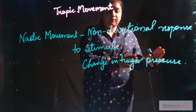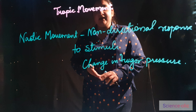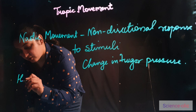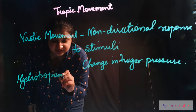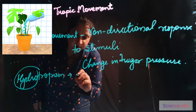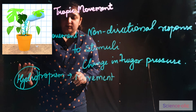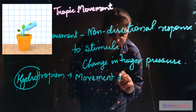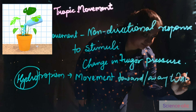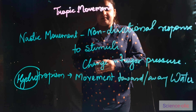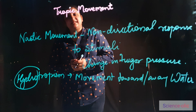Nastic movement responds when there is a change in turgor pressure. The next is hydrotropism. Hydro means water — movement towards or away from the water is known as hydrotropism. This image is showing hydrotropism.